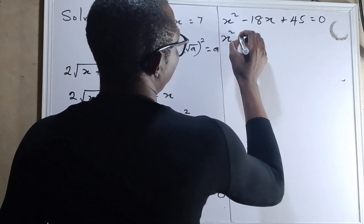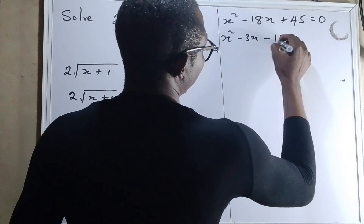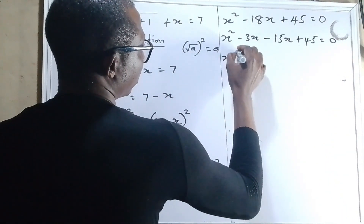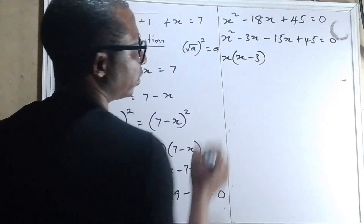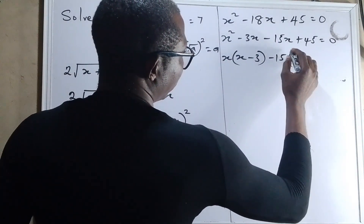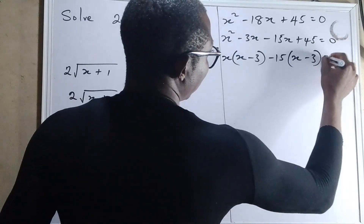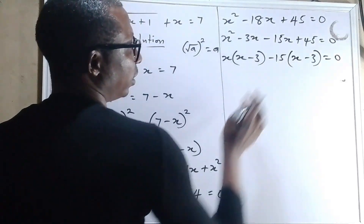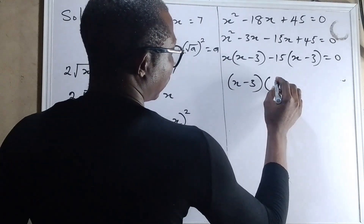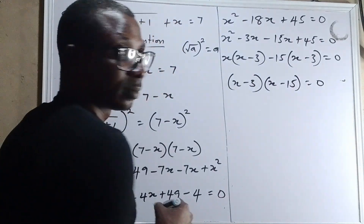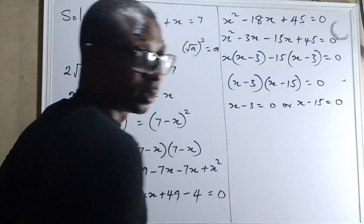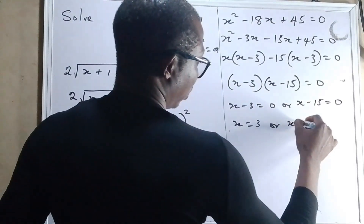So this comes to x squared minus 3x minus 15x plus 45 equals to 0. The common factor in the first two terms is x, so dividing gives x minus 3. The common factor in the last two terms is minus 15, giving x minus 3 equals to 0. The common factor overall is x minus 3, leaving x minus 15. So we have x minus 3 equals to 0 or x minus 15 equals to 0, giving x equals to 3 or x equals to 15.